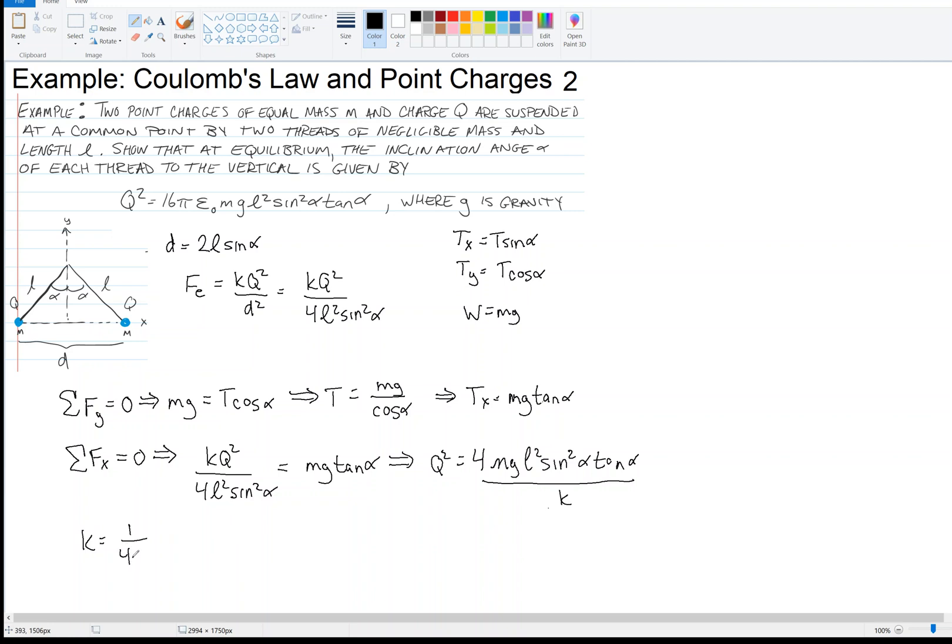Since K is 1 over 4π epsilon 0, then I arrive at what I was trying to prove, and that is 16π epsilon 0 MGL² sine² alpha tangent of alpha. That's it.